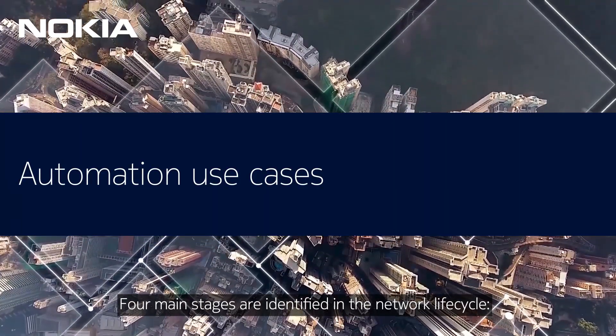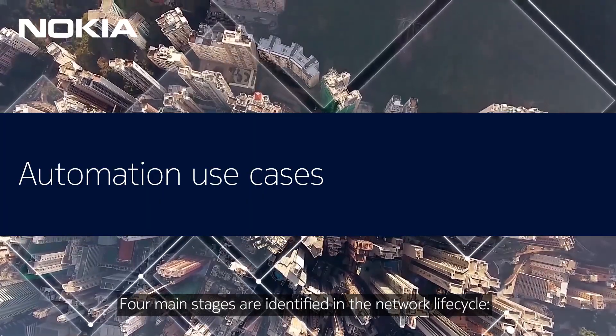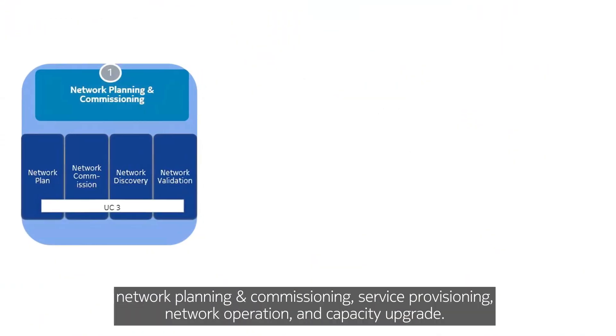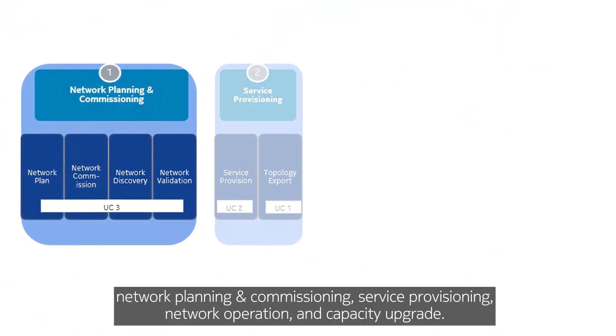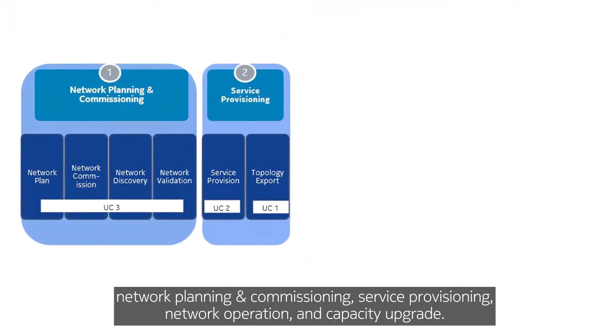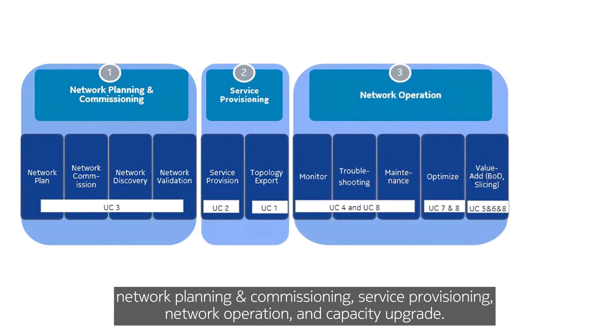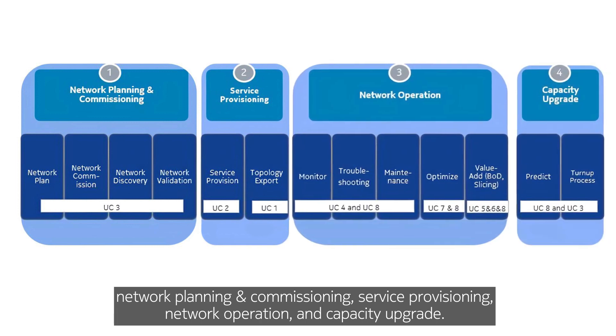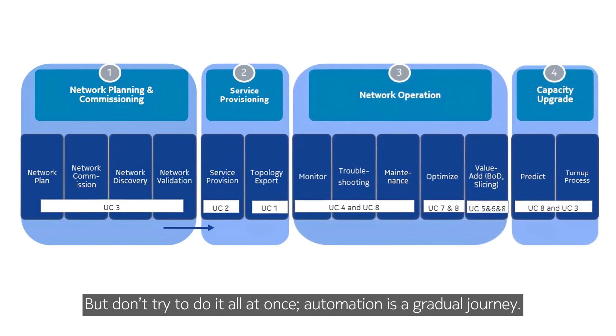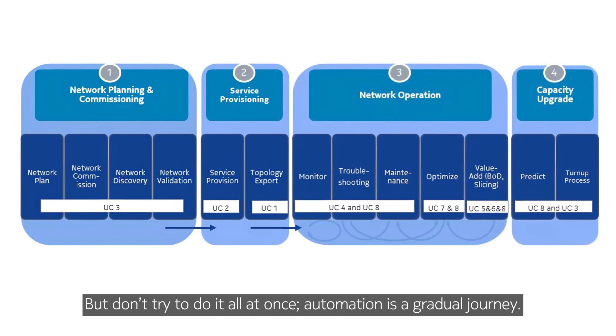Four main stages are identified in the network lifecycle: network planning and commissioning, service provisioning, network operation, and capacity upgrade. But don't try to do it all at once.